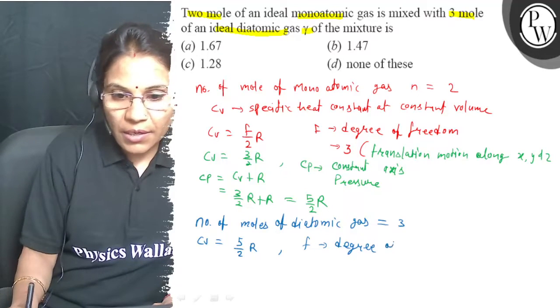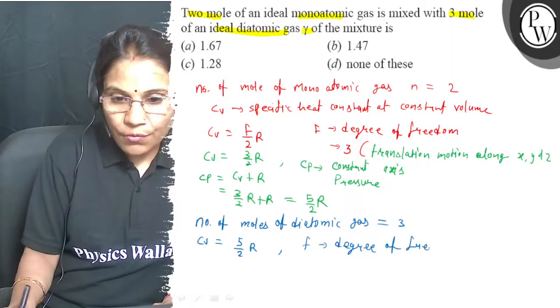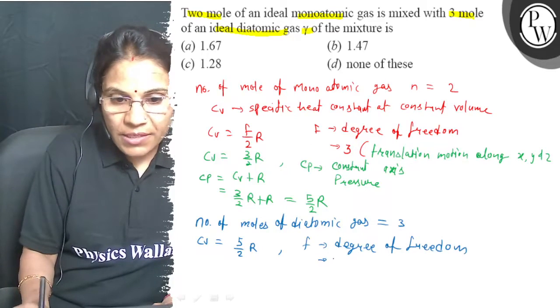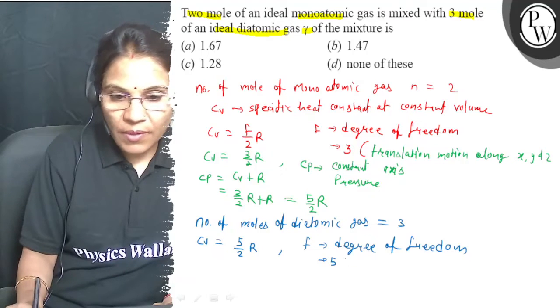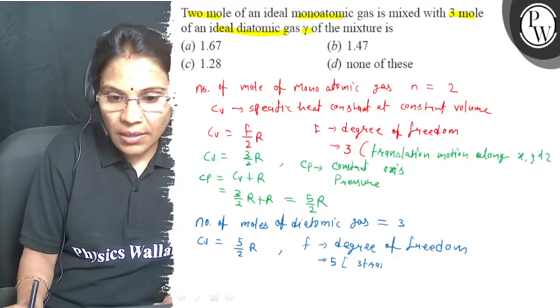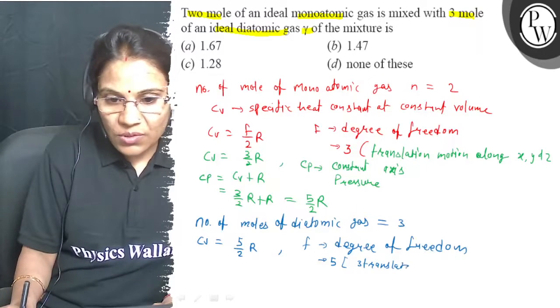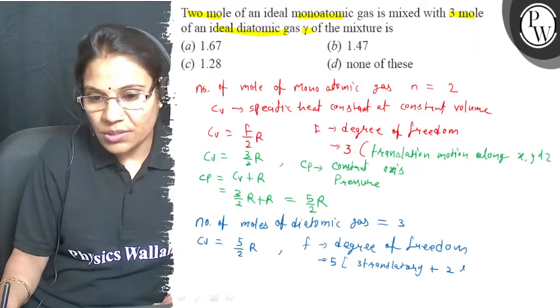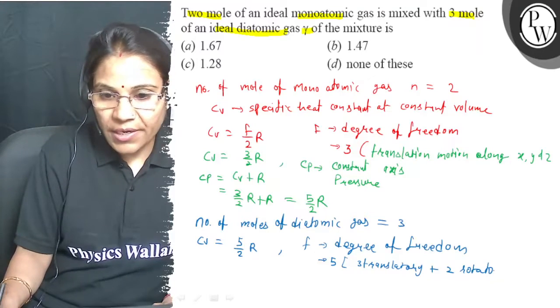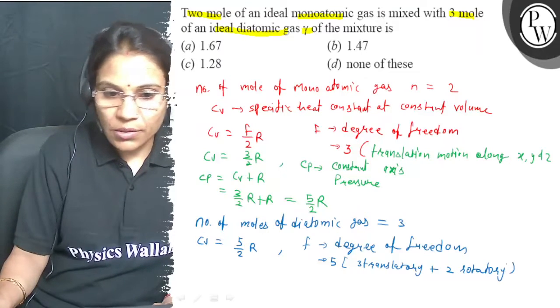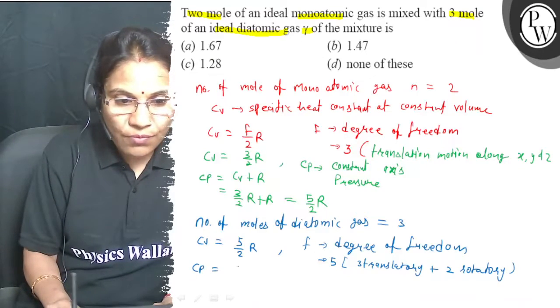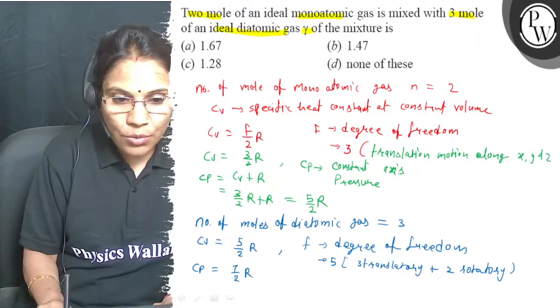Degree of freedom is equal to 5 which is due to 3 translatory motion plus 2 rotatory motion. So, it is total 5 and cp value will be 7/2 R.